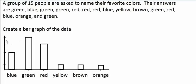Now we make a bar for each category by counting how many times it appears. Let's count the blues: one, two, three — so blue has a frequency of three, and its bar goes to the third tick mark. Now let's count the greens: one, two, three, four, five — there are five greens, so green has a frequency of five and its bar goes up to the fifth tick mark. Green appears more often than blue, which is why green has a higher bar. Then I continue doing the same for red, yellow, brown, and orange, and the bar graph is complete.